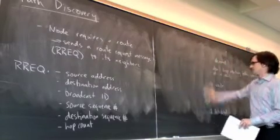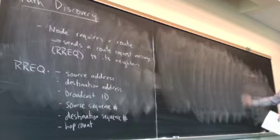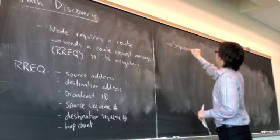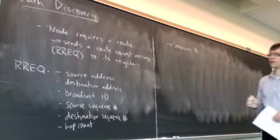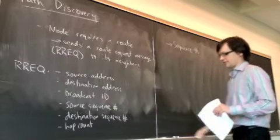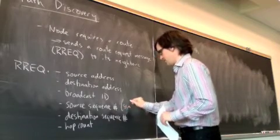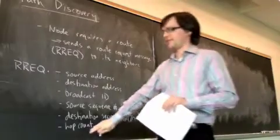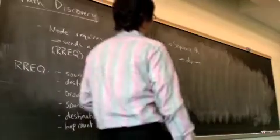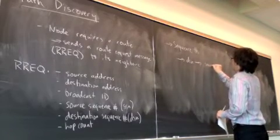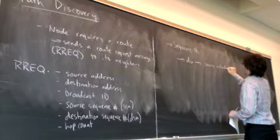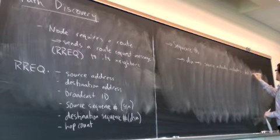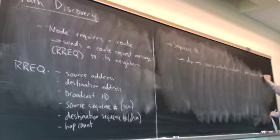Those sequence numbers are what ensure that routes stay fresh. Starting with the destination sequence number — let's call them SSN and DSN — the DSN is the last known destination sequence number for that particular destination that the source includes in its route request.